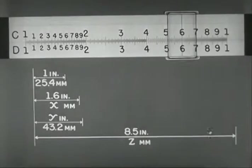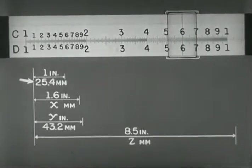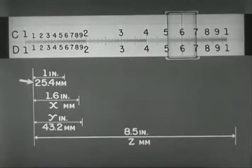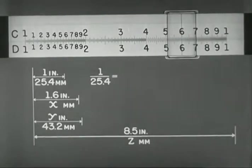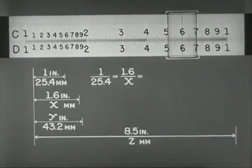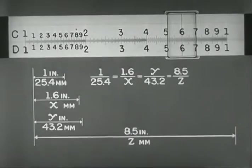Suppose the problem is to convert inches into millimeters, and millimeters into inches. Since 1 inch equals 25.4 millimeters, we write 1 is to 25.4, as 1.6 is to x, as y is to 43.2, as 8.5 is to z.